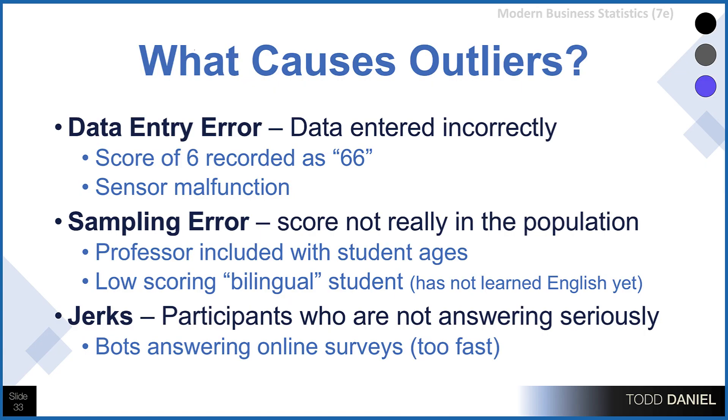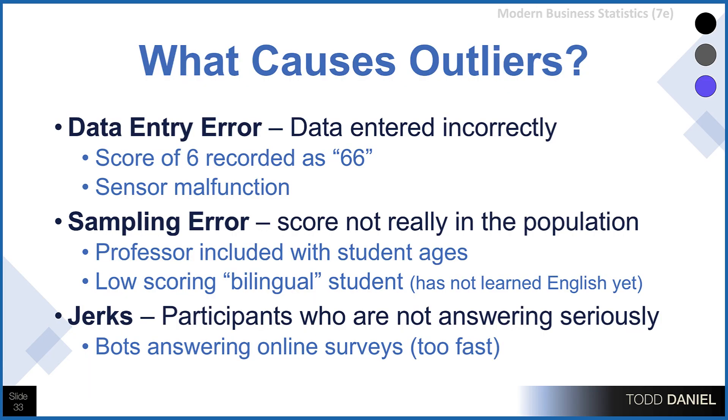There's one more cause for outliers that you typically don't see described in this way: outliers can be caused by jerks. What I mean is you have someone taking your survey who's not taking it seriously — answering one on every item, or creating a heart-shaped pattern on the Scantron form rather than answering seriously. Or you get bots answering your online survey — something that is not a real person but has been coded to answer surveys — and that could mess with your distribution as well. It's okay to remove outliers that are caused by jerks.